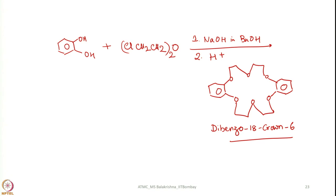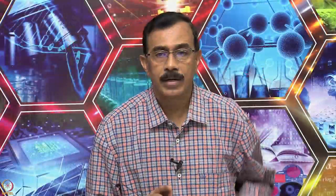Another important ligand among oxygen donors having a cage-type structure is called calixarene. Let me show you a typical calixarene.